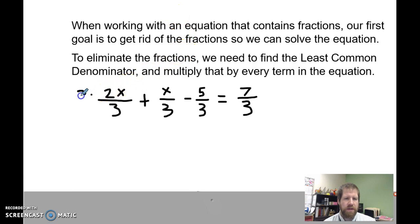I'm going to multiply each of these terms by 3. And because they have the same denominator as what I'm multiplying by, I just am going to cancel that in each of them. That has the effect of just getting rid of my fractions in this case.